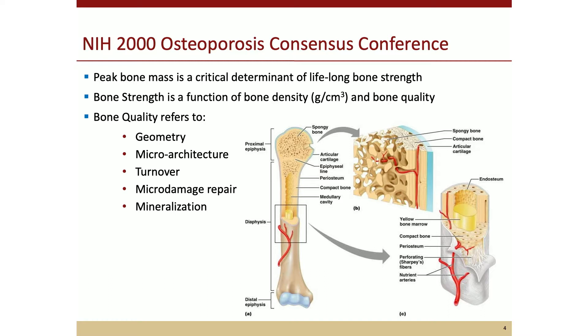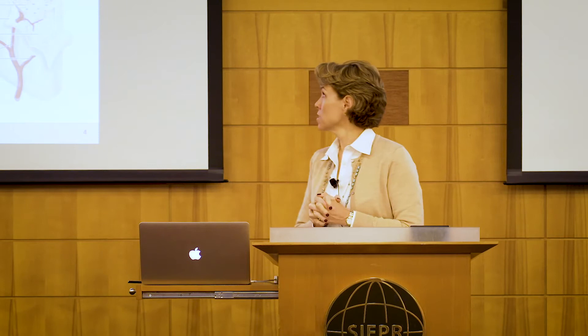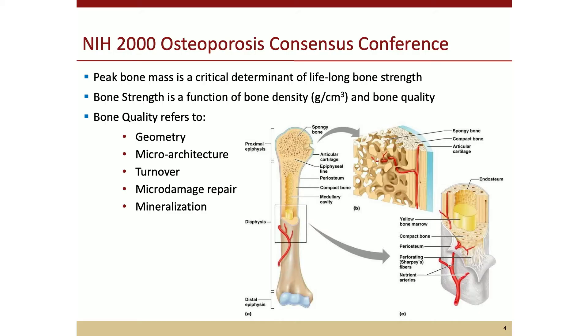It's been almost 20 years since the NIH had its Osteoporosis Consensus Conference, and one of their key conclusions is that peak bone mass is a critical determinant of lifelong bone strength. They then launched into the need for all these studies on children, steroids, and chronic diseases — which was the first sentence of every grant I wrote for the next decade. When we talk about bone, we talk about bone density because older women with osteoporosis go to get a bone density test. But there's really much more about bone that tells you how strong it's going to be. Bone strength is a function of both how dense the bone is and bone quality — which can refer to geometry, microarchitecture, bone turnover, micro damage repair, and how well the bone is mineralized. Increasingly we can measure some of these things, though turnover is tricky because you have to do bone biopsies. For some of the other things, we're getting better with more advanced imaging techniques.